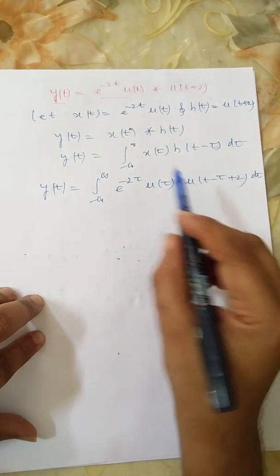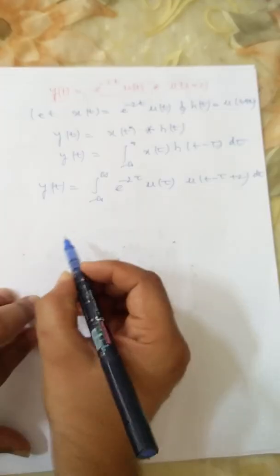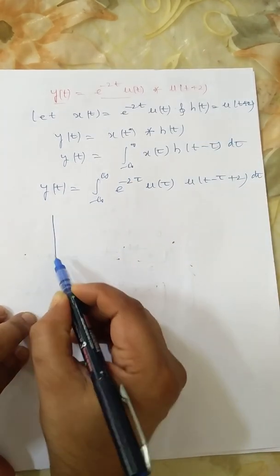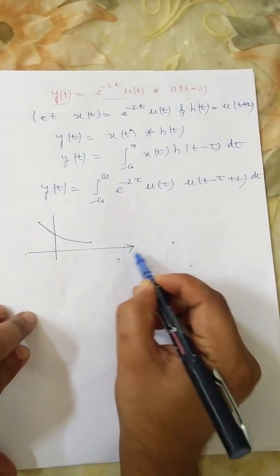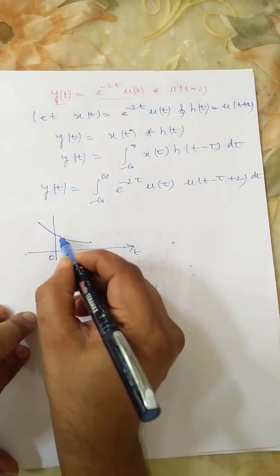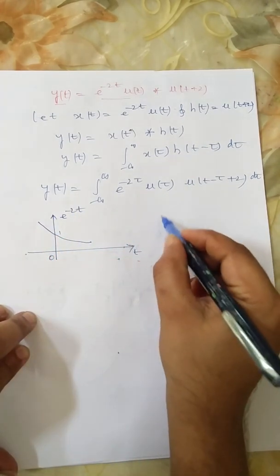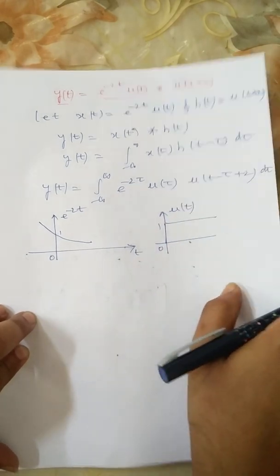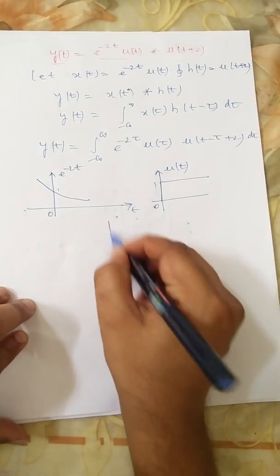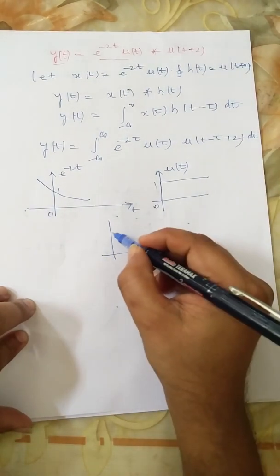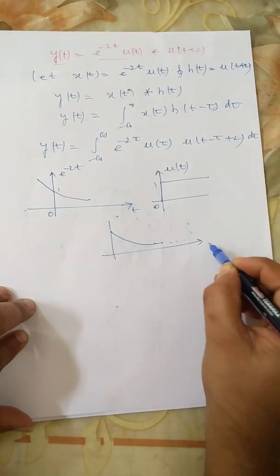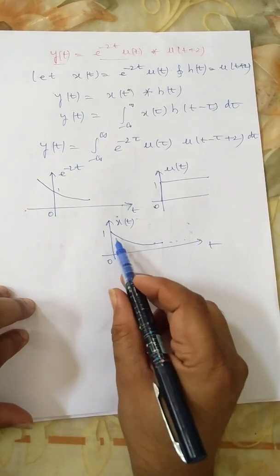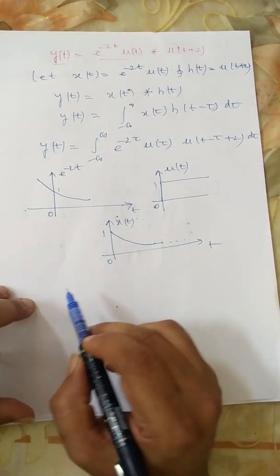Before evaluating this integral, let us draw the input signal and the impulse response. The input signal x(t) = e^(-2t) · u(t) is a decaying exponential signal. Since u(t) has value 1 from 0 to infinity, when multiplied with e^(-2t), we get a decaying exponential that exists from 0 to infinity. This is the fixed signal x(t).